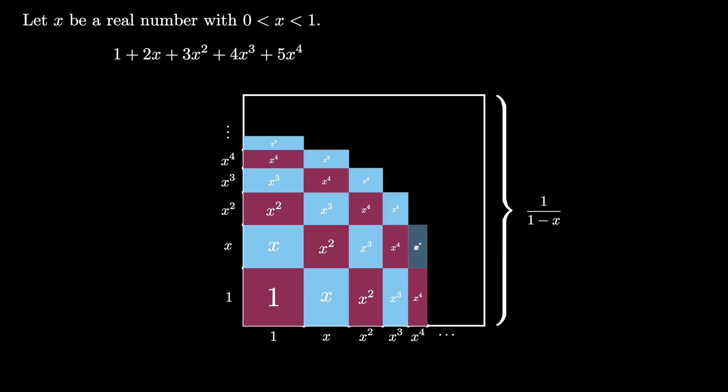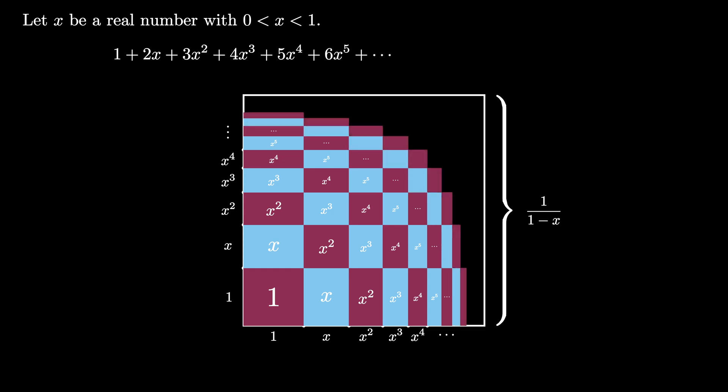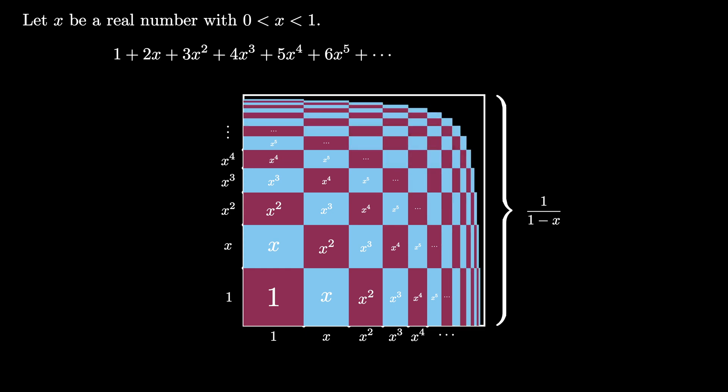And then we have these 6 rectangles enclosing a total area of 6x to the fifth. We can continue this process indefinitely, each time we add n rectangles, each enclosing an area of x to the n minus 1.